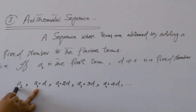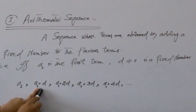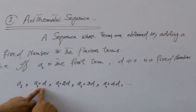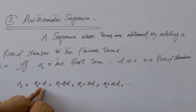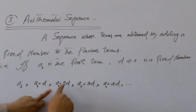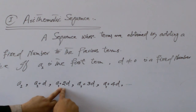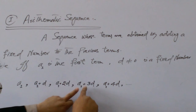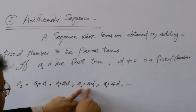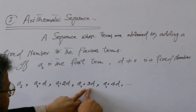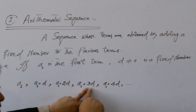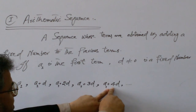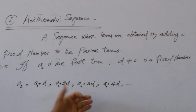When we add D with A1, we obtain A1 plus D. And when we add the same fixed number D to this one, we get A1 plus 2D. Adding D again gives A1 plus 3D, and adding D once more gives A1 plus 4D, and so on.